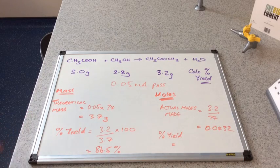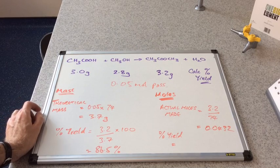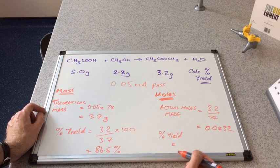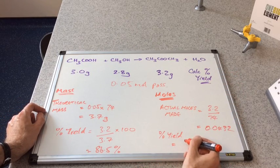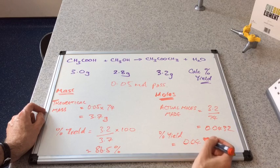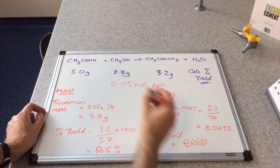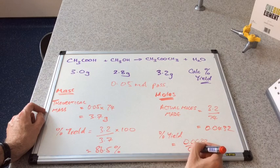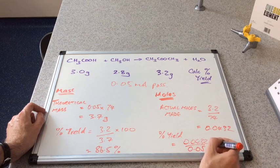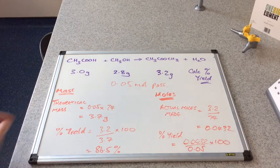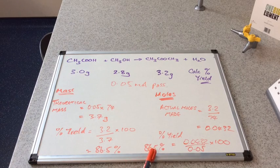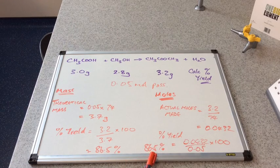Then we're going to express the percentage yields, but we're going to use the moles instead. So the actual moles was 0.0432 divided by the maximum possible, or the theoretical moles, was 0.05 and times 100. I've had to write the answer here. But you can see it is exactly the same as the mass method.